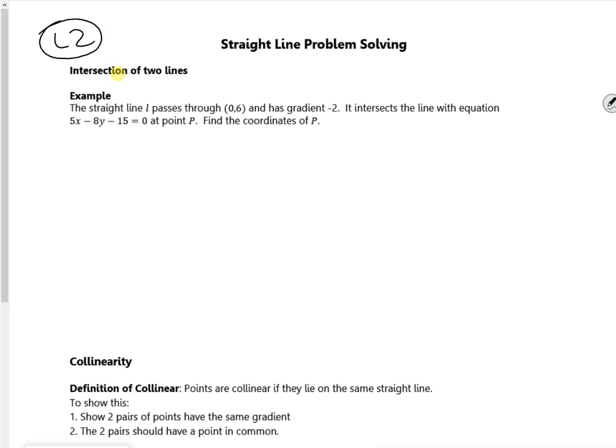So let's have a look at the question then. A straight line L passes through (0,6) and has a gradient of minus 2. So straight away from that information, I know that I can make an equation of a straight line. It intersects the line with the equation. Find the coordinates. So in terms of a plan, I want the equation of the line L and then I want to solve it simultaneously.